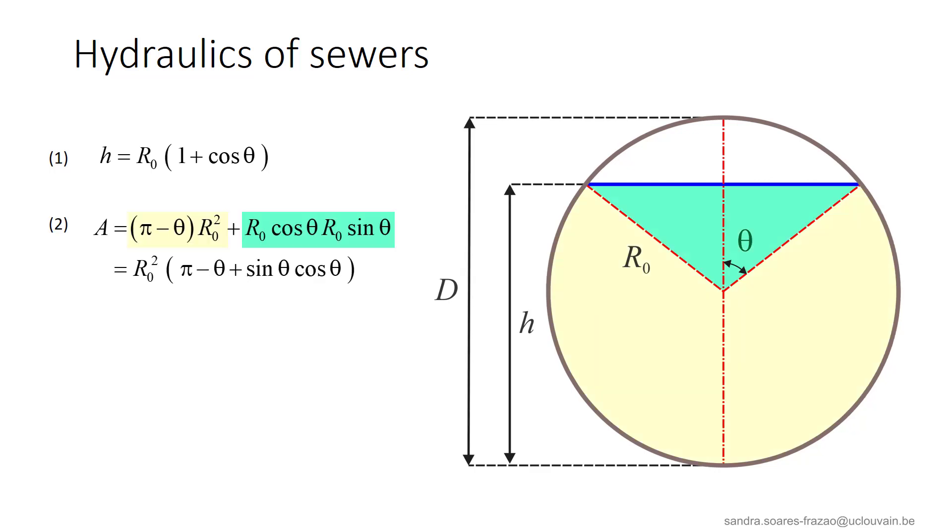We can also express the wetted area by adding the green and yellow areas like this. And finally, the wetted perimeter P, highlighted in red here, can also be expressed as a function of theta. So we have expressed all our main geometrical variables as function of the angle theta and we will now be able to use these values in the Manning equation.